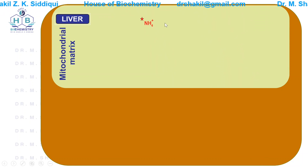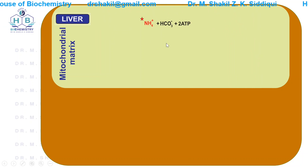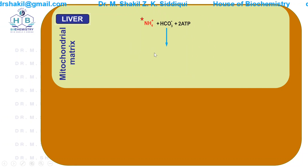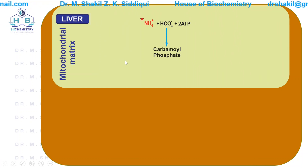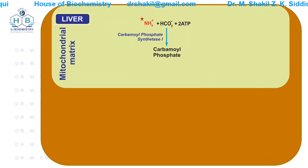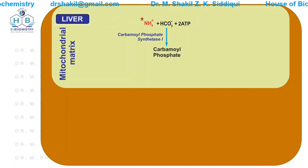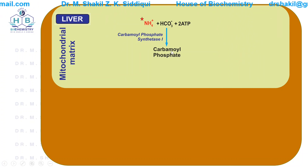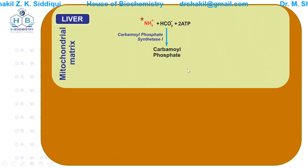Ammonia from blood glutamine condenses with two molecules — bicarbonate and two ATP — to form a compound known as carbamoyl phosphate. This synthesis is catalyzed by a very important enzyme known as carbamoyl phosphate synthetase 1, or CPS1. There is also CPS2, which is situated in the cytosol and is used in the pyrimidine synthesis pathway.